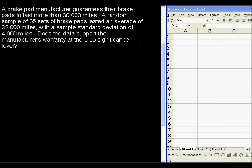A brake pad manufacturer guarantees their brake pads to last more than 30,000 miles. A random sample of 35 sets of brake pads lasted an average of 32,000 miles with a sample standard deviation of 4,000 miles. Does the data support the manufacturer's warranty at the 0.05 significance level?